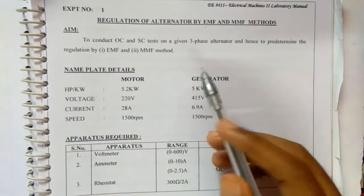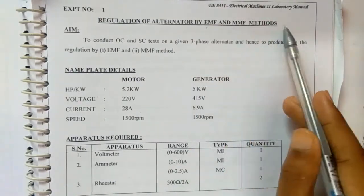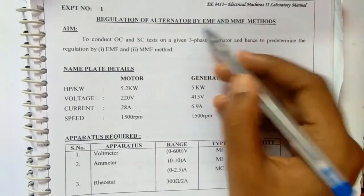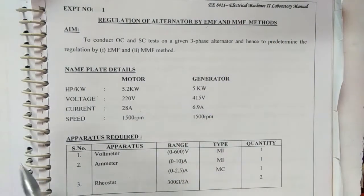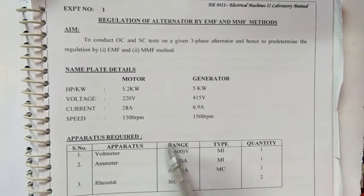Hi guys, today we are going to see about Regulation of Alternator by MMF Methods. We have already covered EMF Methods. So the apparatus required will be Voltmeter, Ammeter and Rheostat in the corresponding ranges.